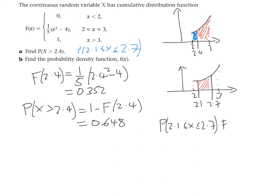And that will give us a fifth of 2.7 squared minus 4, take away a fifth of 2.1 squared minus 4. I've just substituted in our values, 2.1 and 2.7, into our formula. That's why this cumulative distribution function is so useful, because we can just substitute values in to get the probabilities.